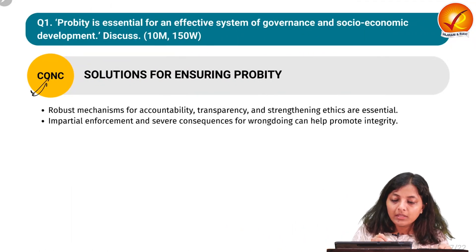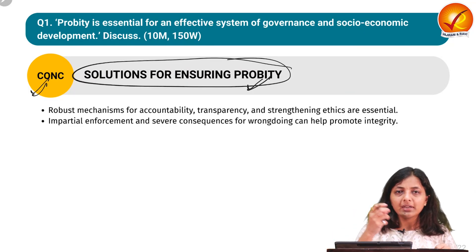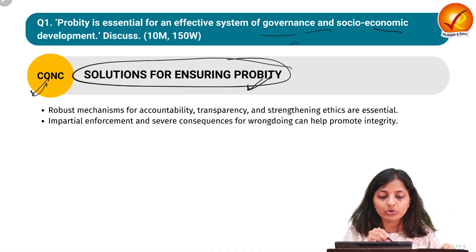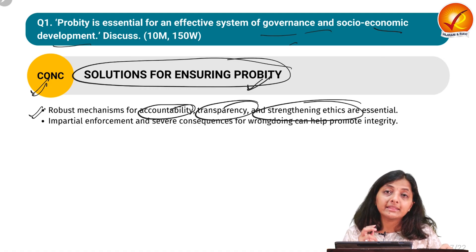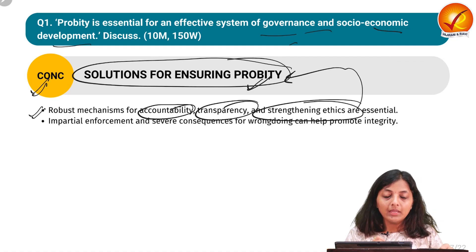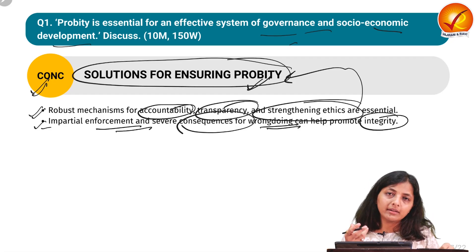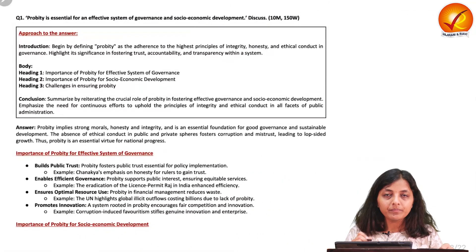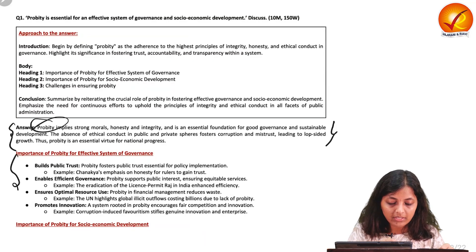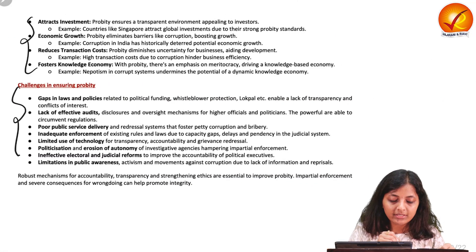In conclusion for question one, we need robust mechanisms for accountability, transparency, and strengthening ethics to ensure propriety. Impartial enforcement and severe consequences for wrongdoing can help promote integrity and propriety in the governance system. The model answer structure is: define propriety, then importance for effective governance, then socio-economic development, then challenges, and finally conclusion.